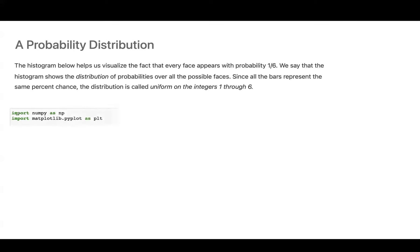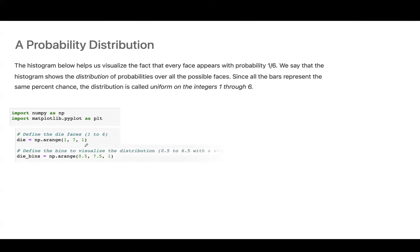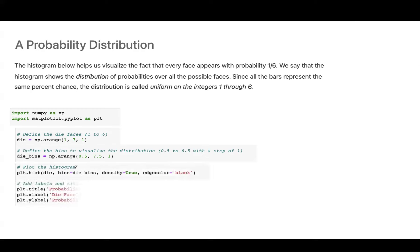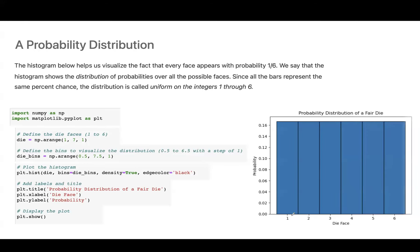Let us import the important libraries: 'import NumPy as np' and 'import matplotlib.pyplot as plt'. We define die faces 1 to 6 using np.arange(1, 7, 1) assigned to 'die'. We then define bins to visualize the distribution: np.arange(0.5, 7.5, 1) as 'bins'. After plotting the histogram and adding labels and title, we can see that all bars have the exact same height, showing equal probability. On the vertical axis we have the probability distribution, and on the horizontal axis are the die faces.